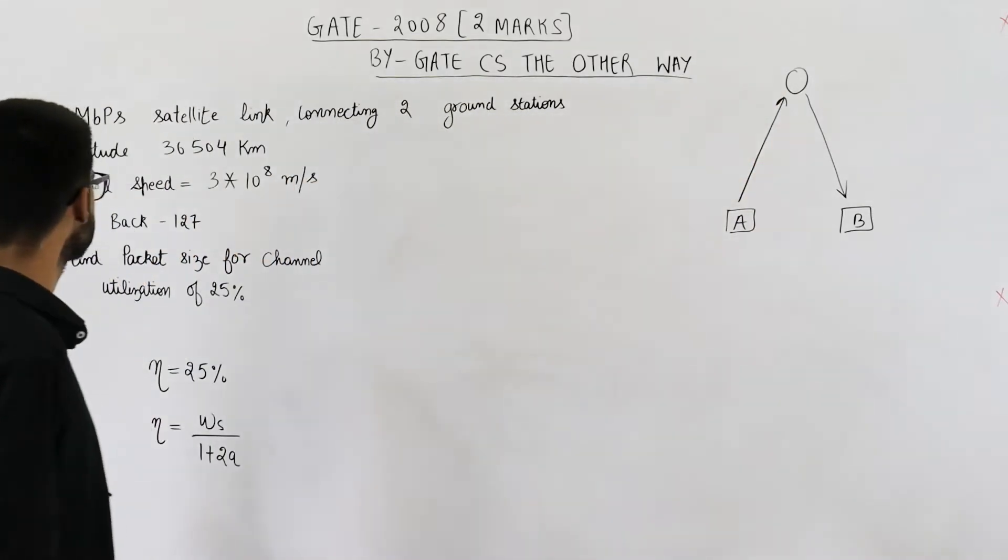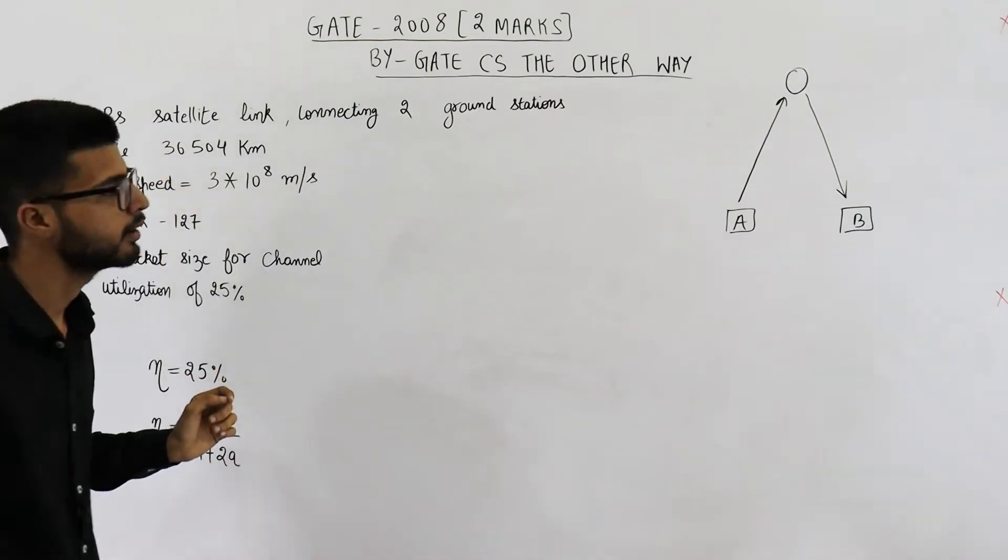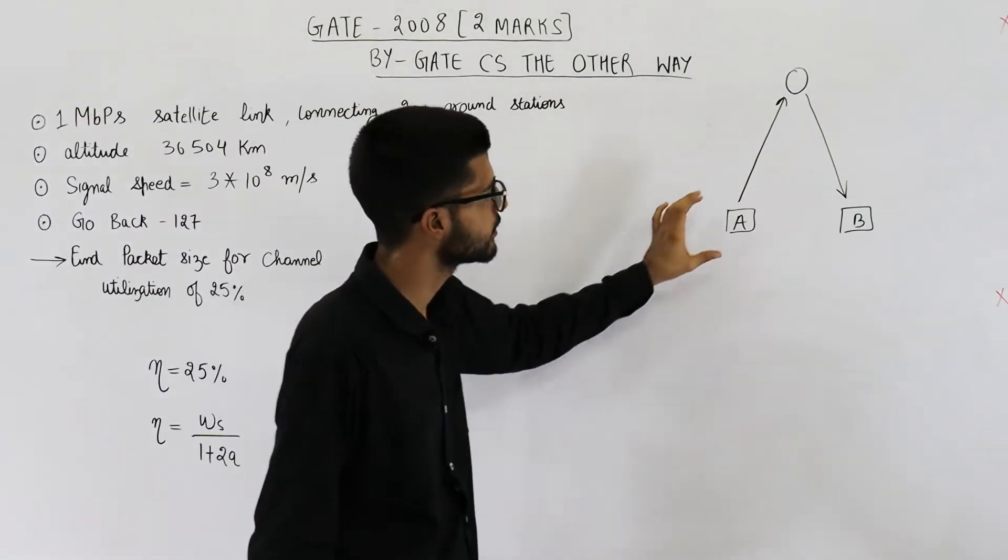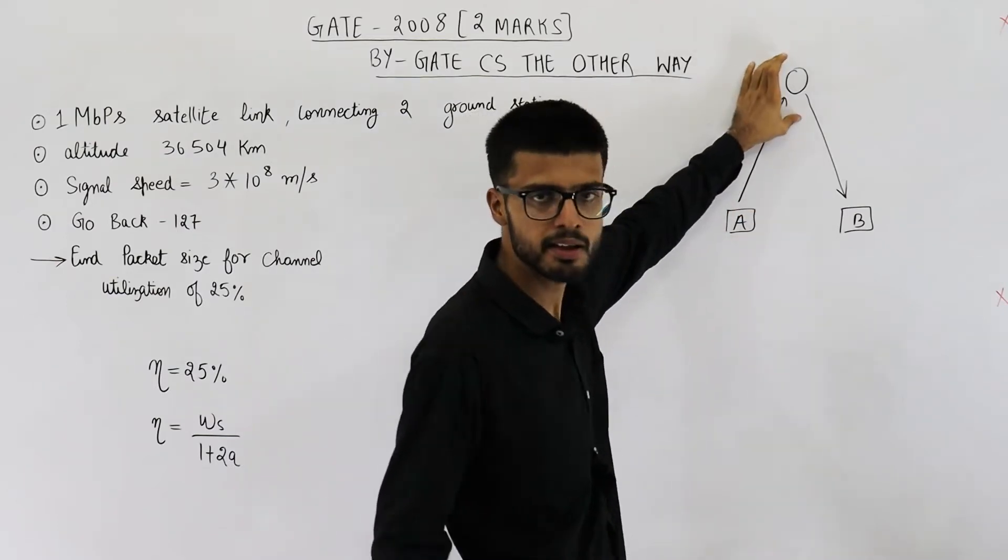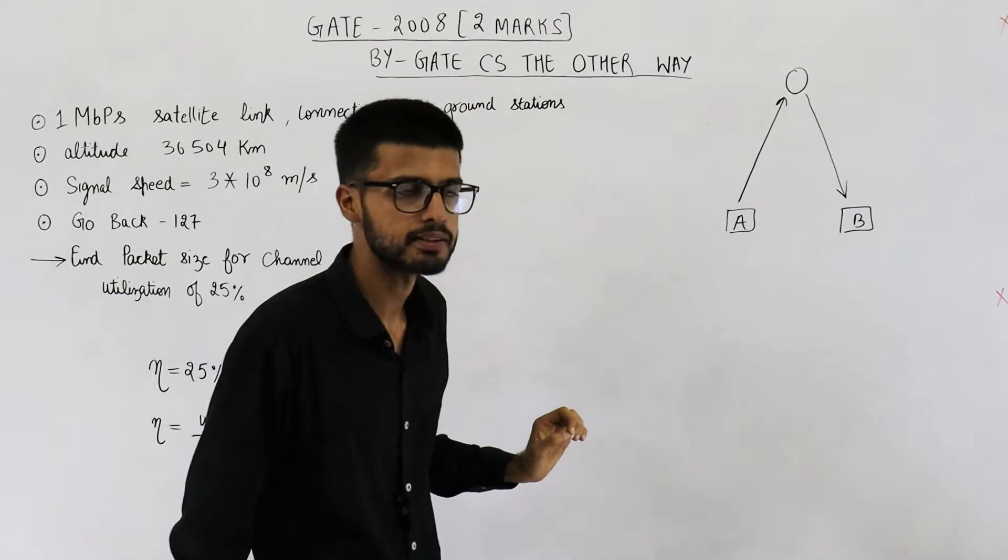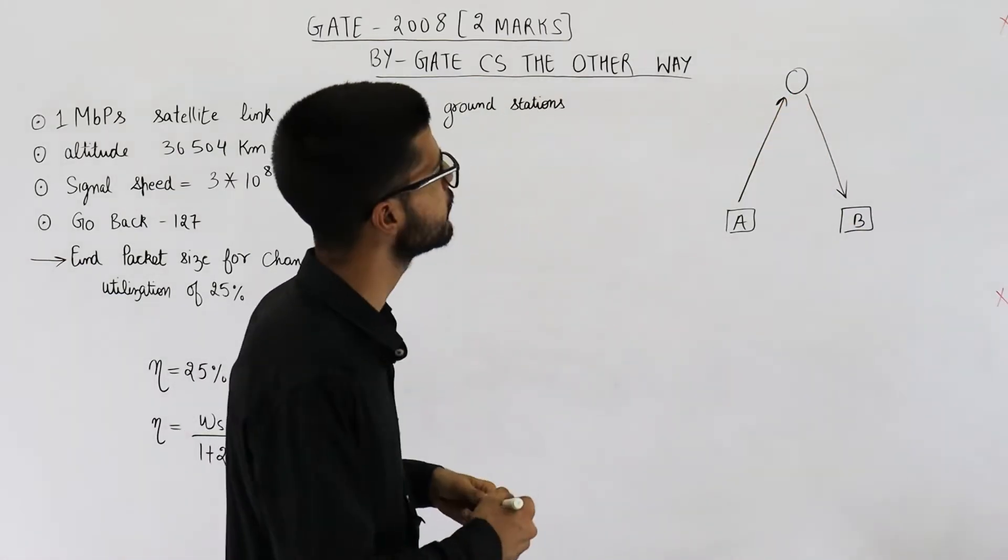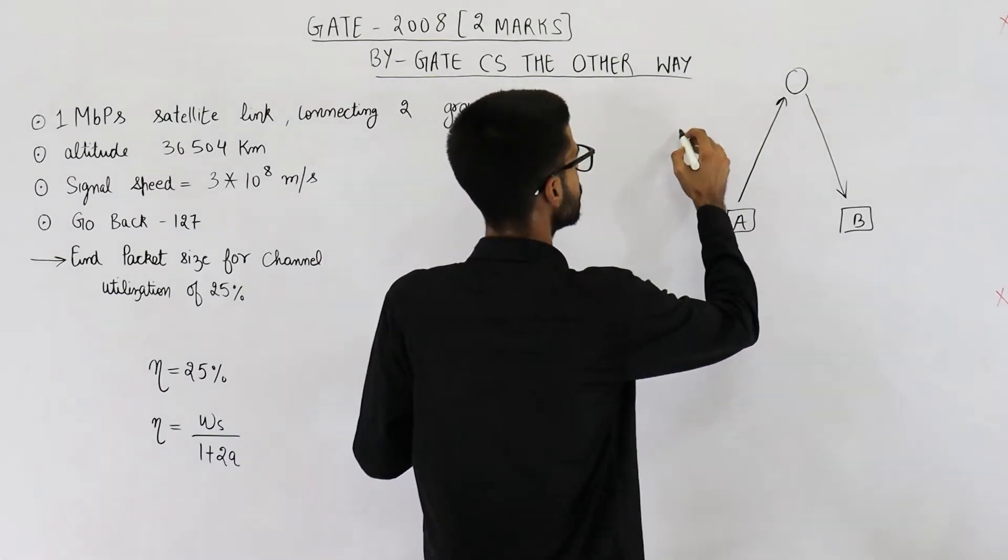Now they are saying altitude of satellite is 36,000 something. That means roughly we can assume that distance between A and the satellite is 36,504 km. Similarly, this distance will also be 36,504 km. So let me write it.